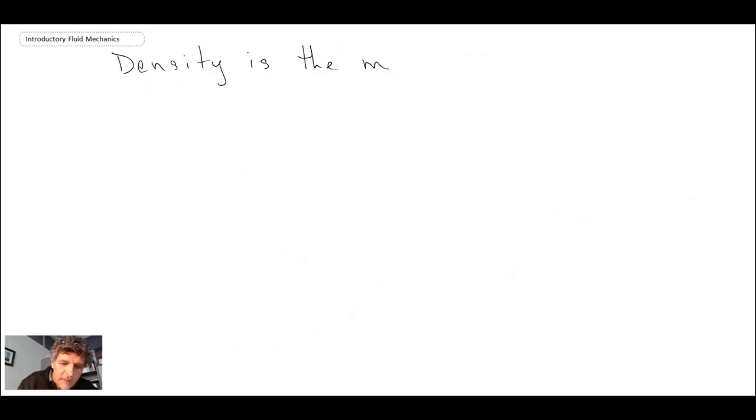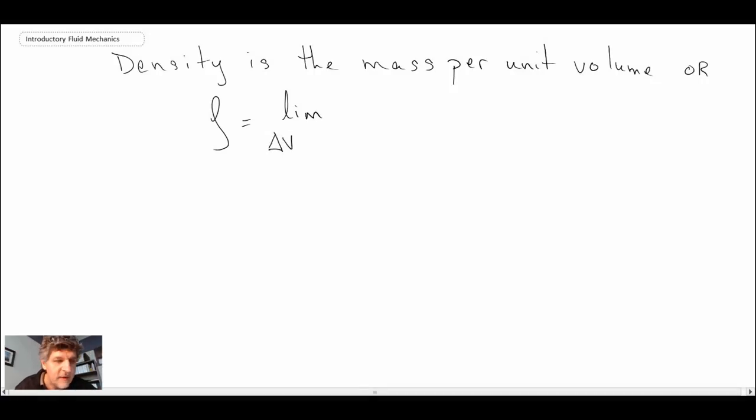So let's explore that a little bit more. So if you remember from any of your physics courses, density is mass per unit volume. Or we can express that, and we always write density as rho in fluid mechanics. We will say that in the limit as delta V, and delta V is going to be the sample volume, approaches what we call delta V star.